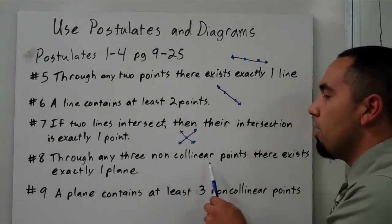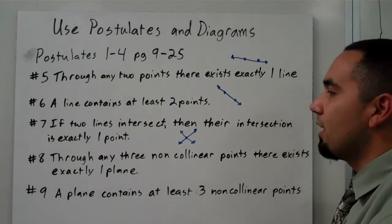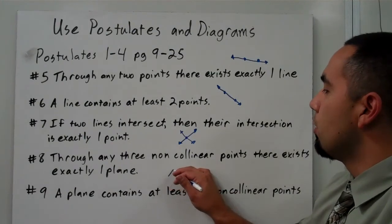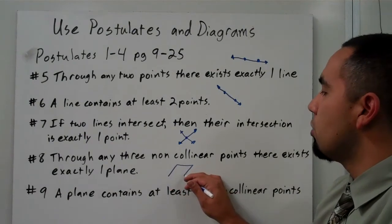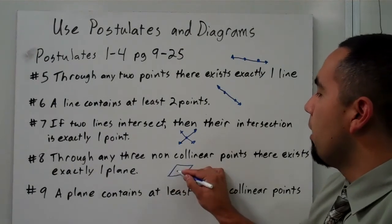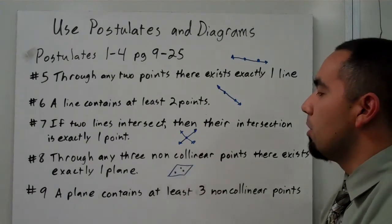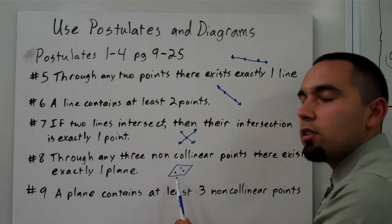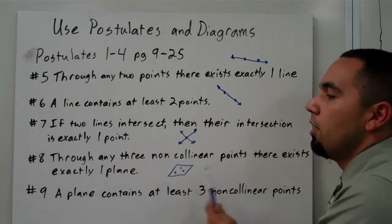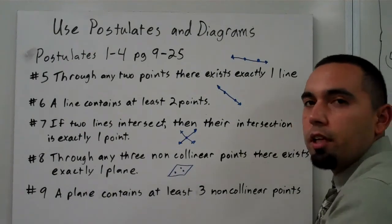So number 8, through any three non-collinear points there exists exactly one plane. So remember the book kind of gives this weird shape for a plane. And remember non-collinear means they do not lie on the same line. So as long as you have three points that are non-collinear, they're going to exist on one plane.